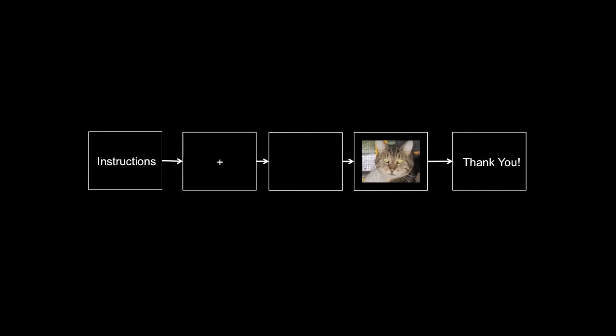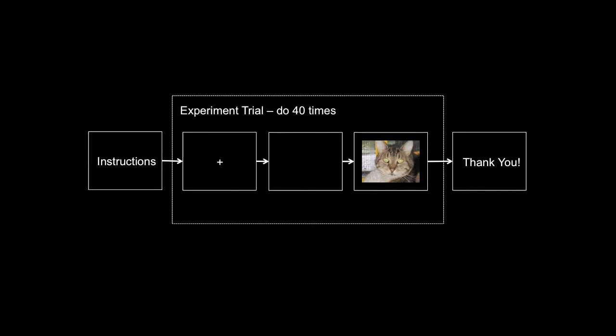This is the general structure of the experiment. We'll give them some instructions to begin with, then present a fixation point, then a blank screen, and then the picture of the cat face. The fixation point and blank screen will be set for 500 milliseconds each, but we'll have the picture of the cat face on screen until the participant makes a response. At the end of the experiment we'll give them a thank you message. We're going to run through this section for 40 cat face pictures - 20 males and 20 females.